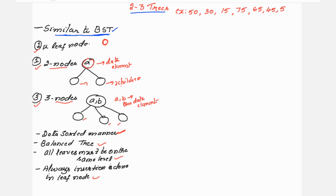Let me show you one more example so that you will get more clarity. In step one, I am placing the element 50. In step two, the second element to be inserted is 30. Since we place it in sorted order, we put 30 first and then 50. This becomes a three-node with no children, which is allowed.